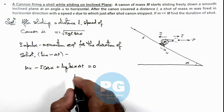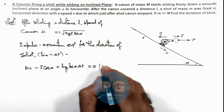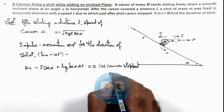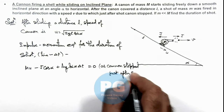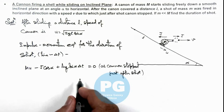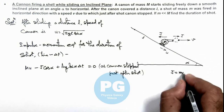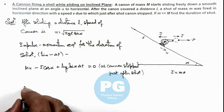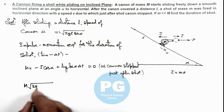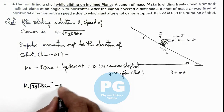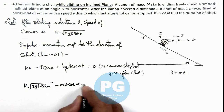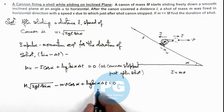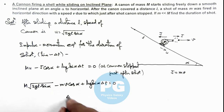This equals zero, as the cannon stopped just after the shot, so its momentum becomes zero. The value of J can be written as mv, the momentum of the shell which is fired. Substituting, we get: M times root of (2 g l sine alpha) minus mv cosine alpha plus Mg sine alpha times delta t equals zero. Simplifying, we can directly get the value of delta t.